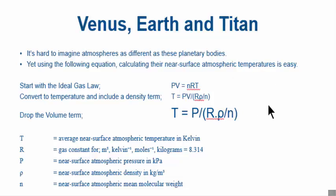Let's go one further for Venus, Earth, and Titan. Let's calculate the surface temperature of these planetary bodies using this formula, the altered ideal gas law. I've thrown out a couple of things and put in a density parameter, ρ. We start with the ideal gas law, PV = nRT, convert the temperature and include a density term, drop out the volume term which we don't need. It's hard to imagine atmospheres as different as Venus, Earth, and Titan. If you can get a simple formula like this and calculate the surface temperature of those three bodies, boy, you've got it made. You've made something very complicated into something very simple.